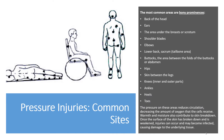The most common sites for pressure injuries are bony prominences: the back of the head, ears, area under the breasts or scrotum, shoulder blades, elbows, lower back, sacrum, tailbone, buttocks, area between the folds of the buttocks or abdomen, hips, skin between the legs, knees (inner and outer), ankles, heels, and toes. Pressure on these areas reduces circulation and decreases oxygen to cells. Warmth and moisture also contribute to skin breakdown, and once the skin's surface is weakened, injuries can occur and may become infected, causing damage to underlying tissue.